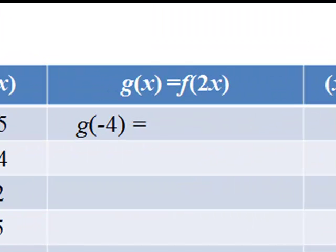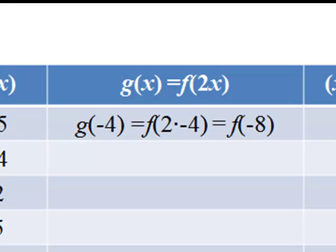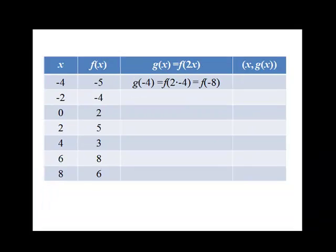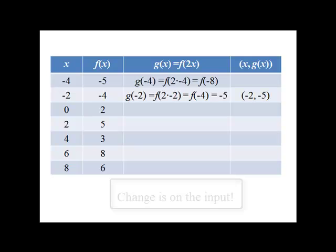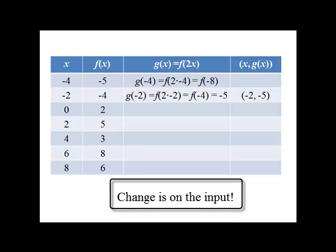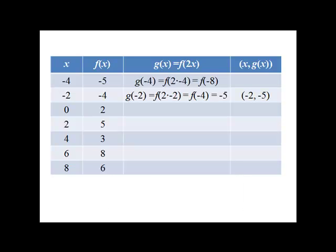Let's start by calculating g of negative 4, which is f of 2 times negative 4, or f of negative 8. Now, there is no f of negative 8 here, so we can't find a point for this one. But if we do the same thing for g of negative 2, we get the point negative 2, negative 5. The change is on the input, so we didn't change the output — we changed its location. So this is going to move horizontally.